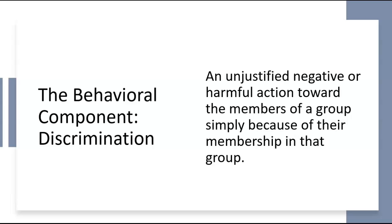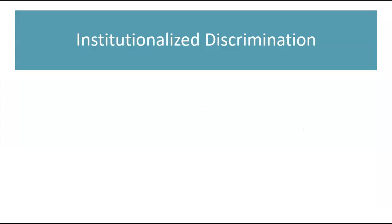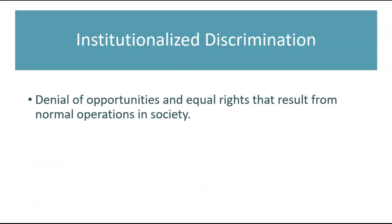Discrimination can take many different forms — sometimes it's direct and personal, sometimes it's institutional. With institutionalized discrimination, we typically talk about denials of opportunities and denials of rights that should be embedded into daily life — denial of equal access to housing, jobs, high-quality education, and even access to voting. All of those things can be institutionalized forms of discrimination.